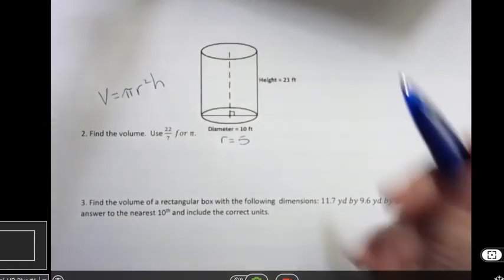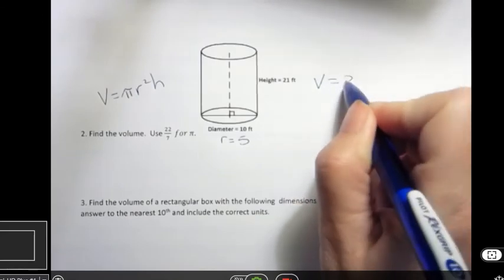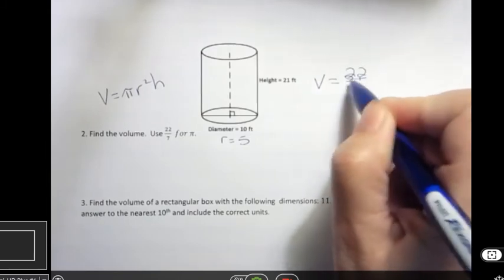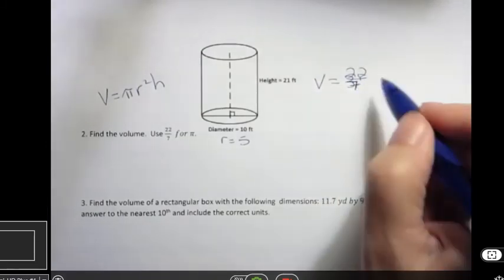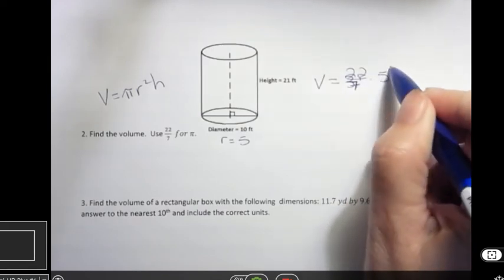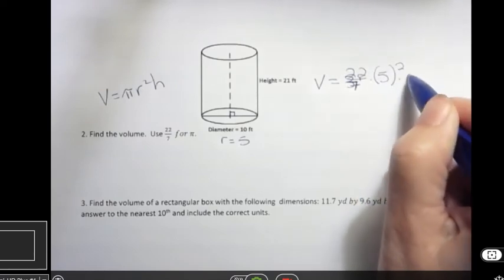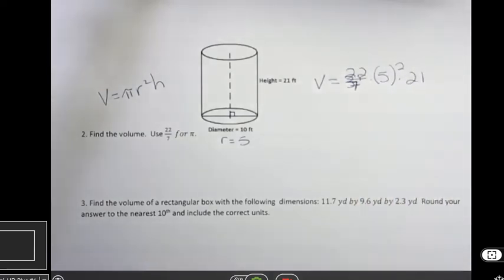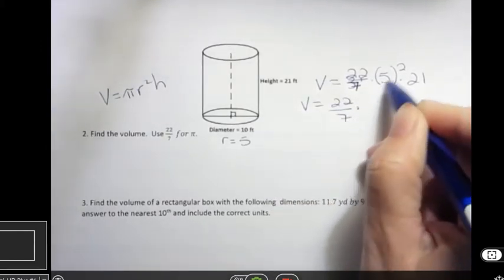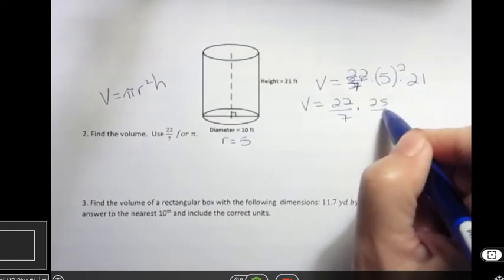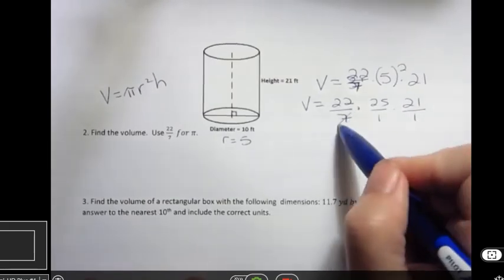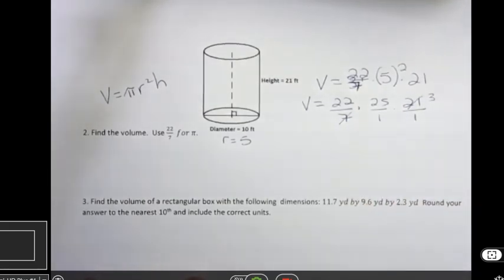So what I'm looking at here is volume equals 22 7ths they ask us to use. I'm going to try to remember that. 22 7ths times 5 squared times the height which is 21. So if I write that a little bit nicer and kind of do a little work here, 5 squared is 25 and then I can put 21 over 1. And then I can see that 7 goes into 21 3 times, which is kind of nice.